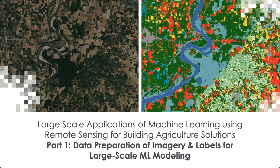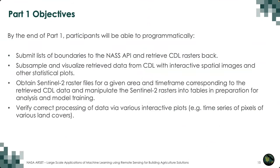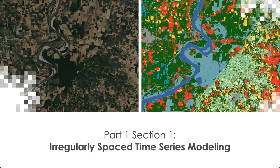Part one will deal with data preparation of imagery and labels for large-scale machine learning modeling. By the end of part one, participants will be able to programmatically submit lists of boundaries to the NASS API and retrieve the cropland data layer rasters, subsample and visualize retrieved CDL data with interactive spatial images and statistical plots, obtain Sentinel-2 raster files for a given area and time frame corresponding to the retrieved CDL data, and manipulate the Sentinel-2 rasters into tables in preparation for analysis and model training, as well as verify correct processing via interactive plots including time series of pixels and various land covers.